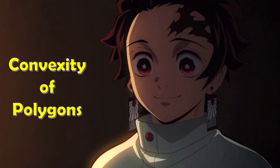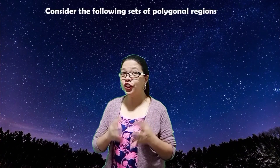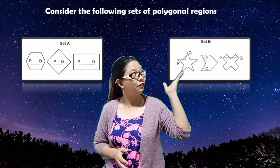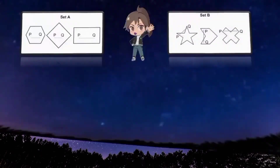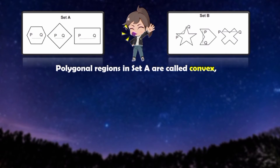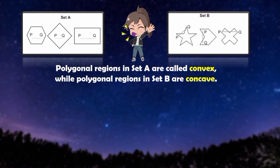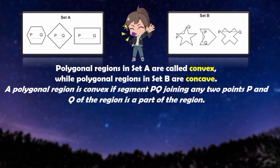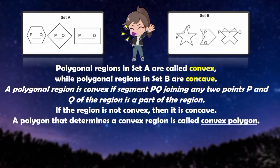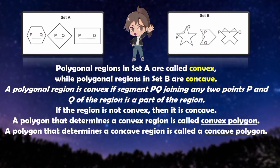Convexity of Polygons. Consider the following sets of polygonal regions. Can you state the difference between the regions in Set A and in Set B? Polygonal regions in Set A are called convex, while polygonal regions in Set B are concave. A polygonal region is convex if segment PQ joining any two points P and Q of the region is a part of the region. If the region is not convex, then it is concave. A polygon that determines a convex region is called a convex polygon, and a polygon that determines a concave region is called a concave polygon.